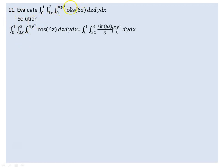The integral of cosine 6z is sine 6z over 6. Evaluating at z equals pi gives sine 6pi times y squared, and sine 0 equals 0. So we now have 1 over 6 times the integral from 0 to 1 of sine 6pi y squared dy dx.